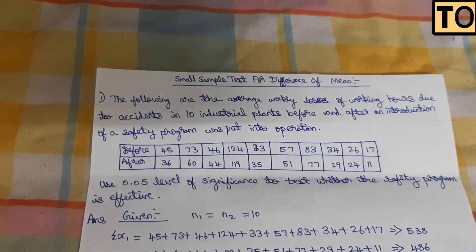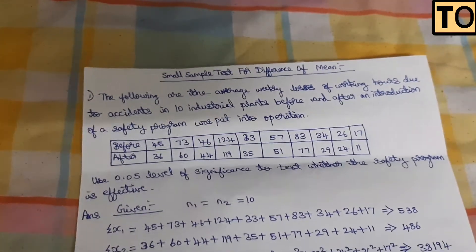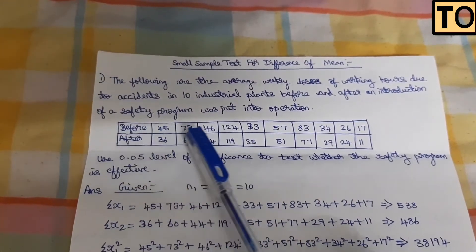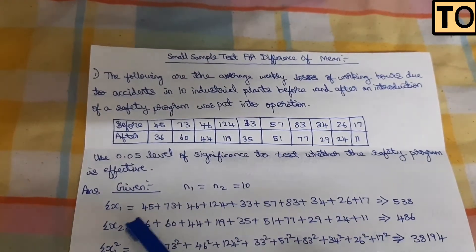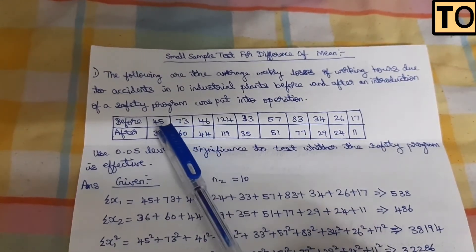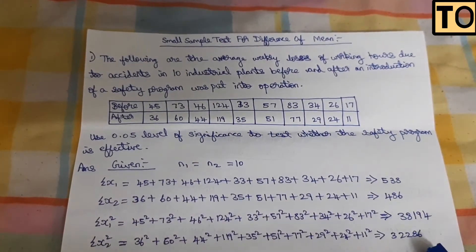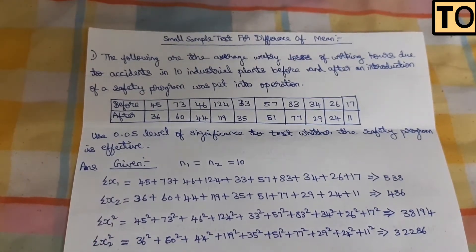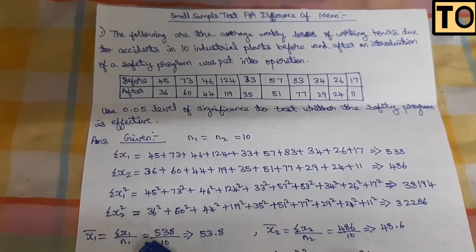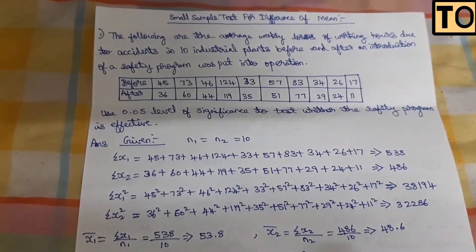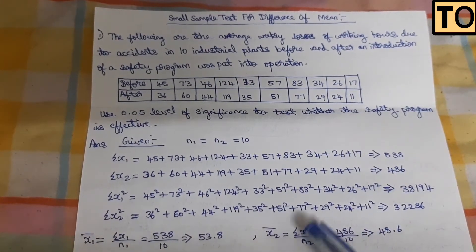For the small sample test for difference of means, we need the summation of x1, summation of x1 squared, summation of x2, and summation of x2 squared. The formula for x1-bar is the summation of x1 divided by n1, and x2-bar is the summation of x2 divided by n1.